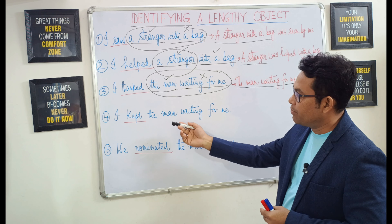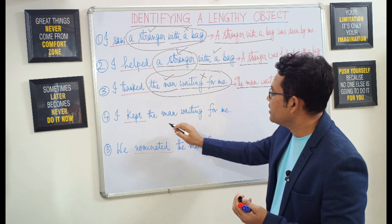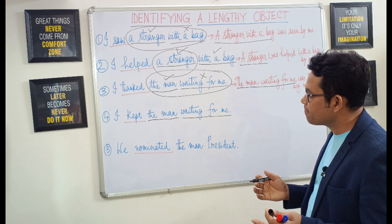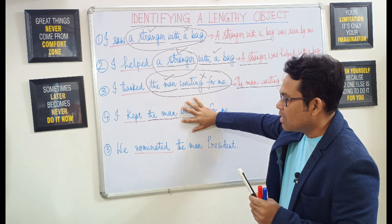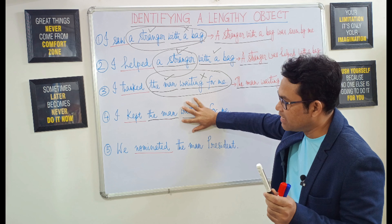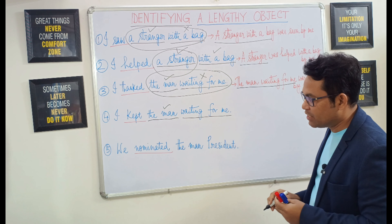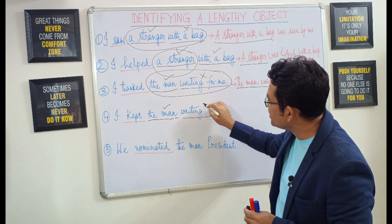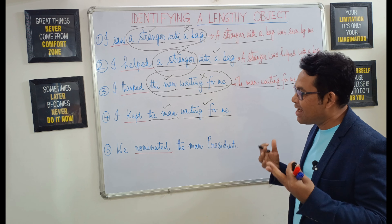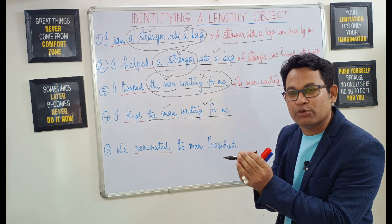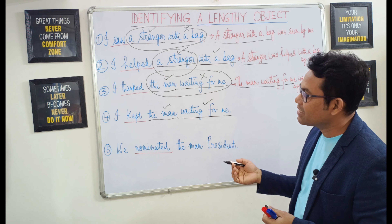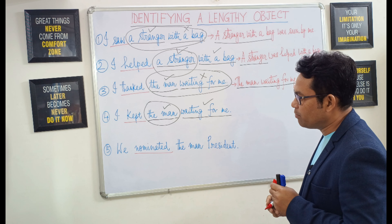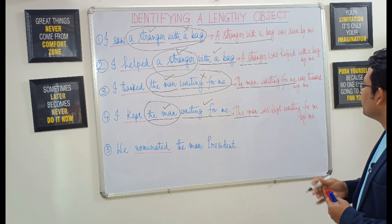After the transitive verb 'kept,' we are getting two units: 'the man' — a noun phrase — and 'waiting for me' — an adjective phrase. Let's apply the same rule. 'I kept the man' — it is making some sense, so 'the man' is an independent unit. But 'I kept waiting for me' is also making some sense, not complete sense though, so 'waiting for me' is also an independent unit here. Therefore, two independent units should not be kept together — they should be kept separated. The object in this sentence is the noun phrase 'the man.' The passive voice will be: 'The man was kept waiting for me by me.'